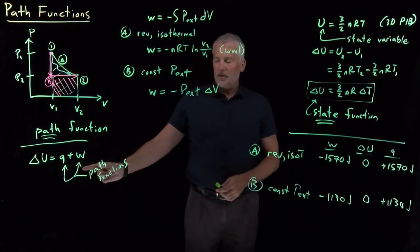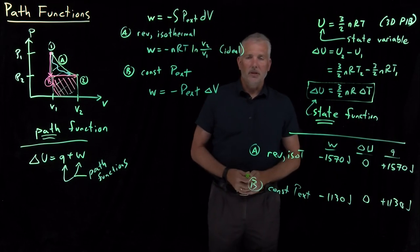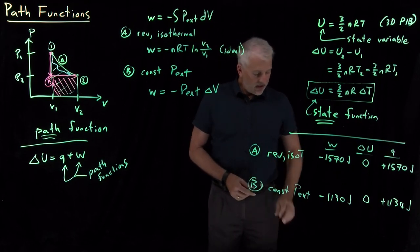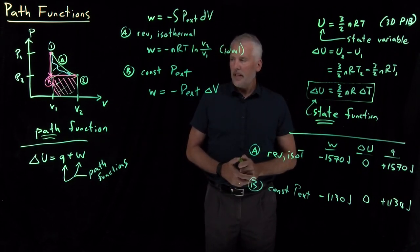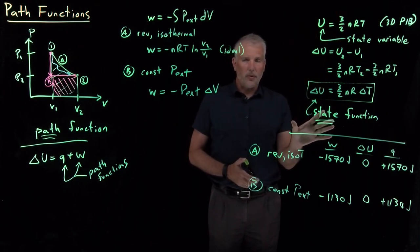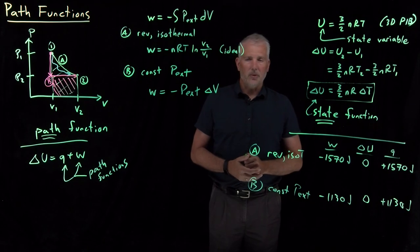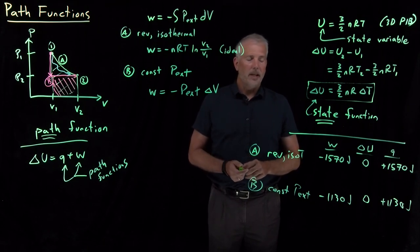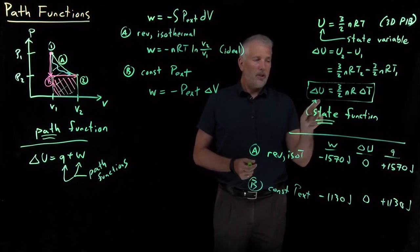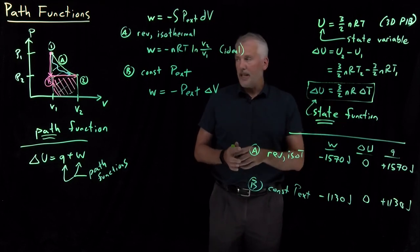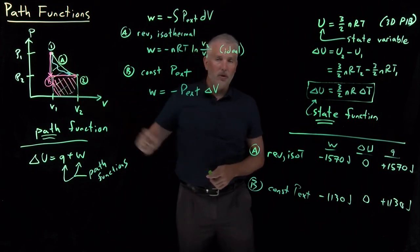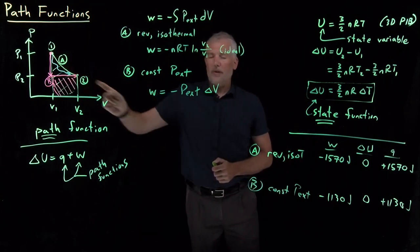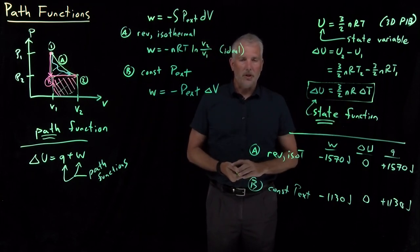The sum of these two path functions equals the state function — that's what tells us the difference between path functions and state functions. In general, we much prefer to deal with state functions where we only have to know the starting and ending points of a process without paying attention to the path. In fact, if we want to calculate a state function, we can choose any convenient path — whatever changes we calculate from initial to final will be the same value regardless of the actual path taken.